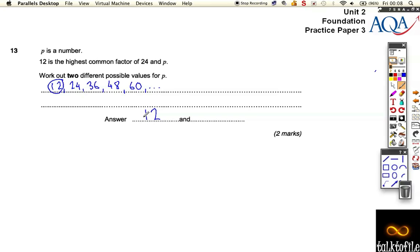Or we could have chosen 36. We can't choose 24 because 24 would be the highest common factor there. We could choose 36—12 goes into 24 and it goes into 36, and 12 is the biggest one that goes into both of those.